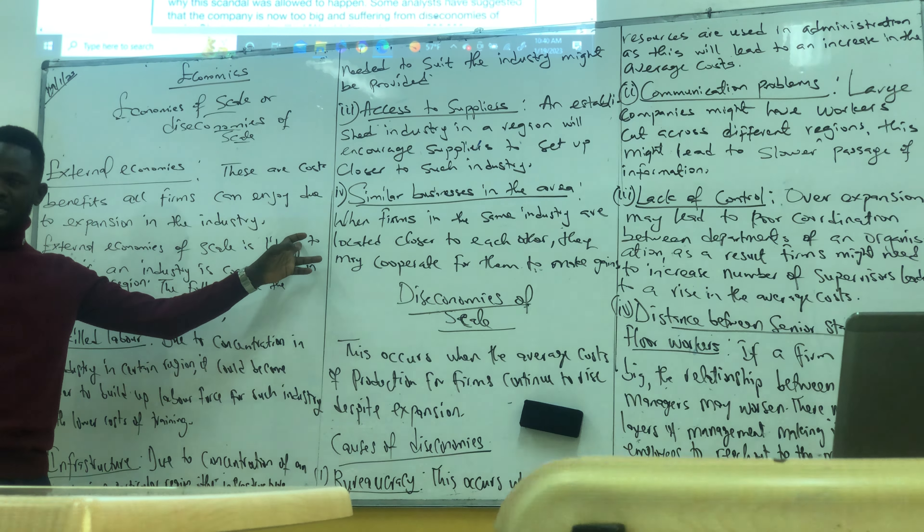External economies of scale is likely to occur if an industry is concentrated in a certain region. Before the industry can really enjoy external economies of scale, it would have meant that the industry is concentrated in a particular region — like Tripoli. So all schools in Libya are in Tripoli, which means the schools in Tripoli will be able to enjoy external economies of scale. That's what concentration means here.